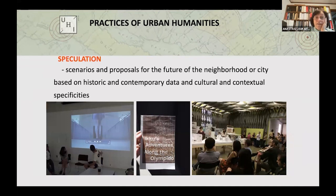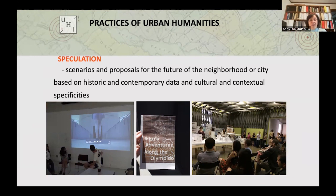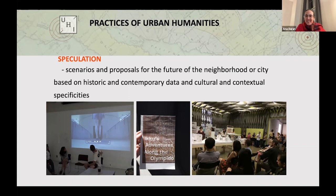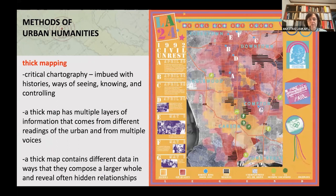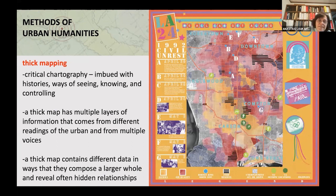Urban humanities speculates for the future, offering scenarios and proposals for neighborhoods and cities based on both historic and contemporary data and cultural specificities. Thick mapping — one of its core practices — draws from critical cartography imbued with histories, ways of seeing, knowing, and controlling. A thick map has multiple layers of information coming from people's different readings of the urban and from multiple voices.